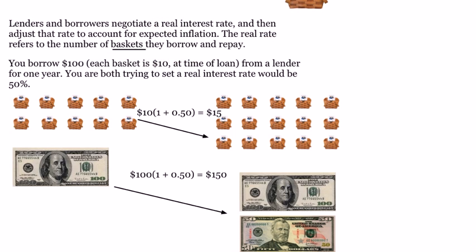Suppose that you borrow $100, and at the time, one basket is $10. So when you take the loan of $100, you can buy 10 baskets from a lender for one year. And y'all are both trying to set a real interest rate that would be about 50%. So what you're trying to do is, when you borrow $100, it's like you're borrowing 10 baskets.